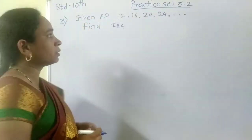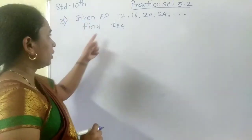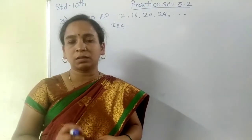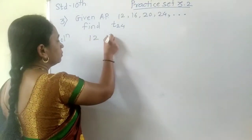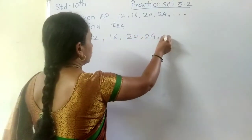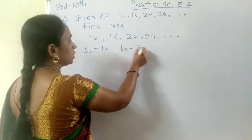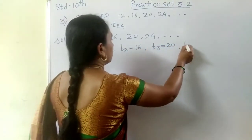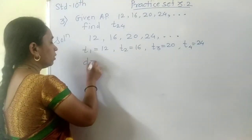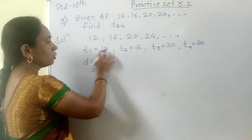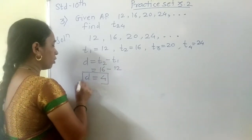Next example: the sequence 12, 16, 20, 24 is in AP. T1 equals 12, T2 equals 16, T3 equals 20, T4 equals 24. D equals T2 minus T1 equals 16 minus 12 equals 4. So the common difference D is 4.